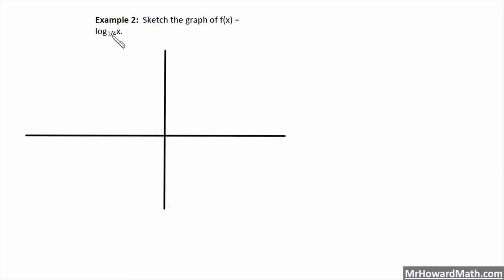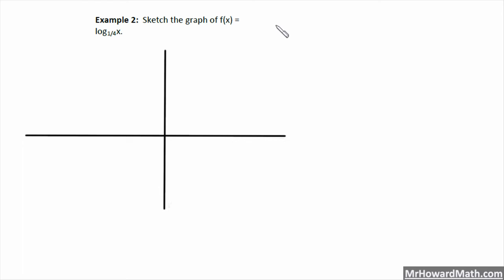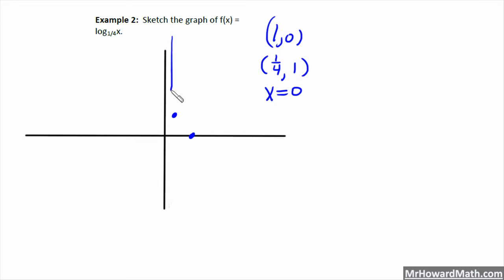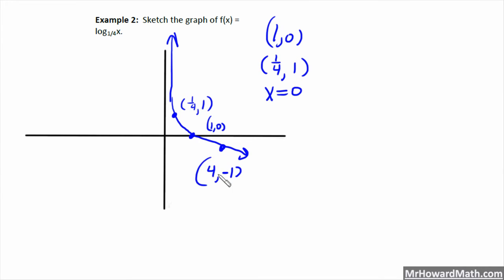Example 2: sketch the graph of f(x) = log base 1/4 of x. The base is between 0 and 1, so we'll have this shape. With logarithms we always have the points (1, 0) and (base, 1). For us that's (1/4, 1). So (1/4, 1) is about right here and (1, 0) is right here. We have a vertical asymptote x equals 0, so the graph comes through here like this. We would also have the point (4, -1) — the reciprocal of the base — down here.